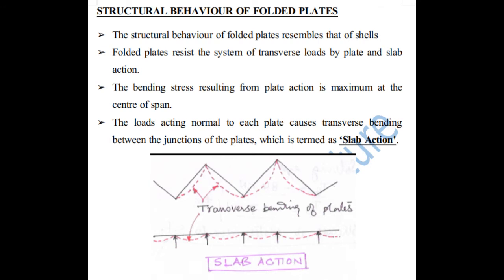The bending stress resulting from the plate action is maximum at the center of span. The loads acting normal to each plate cause transverse bending between the junctions of the plate — this phenomenon is called slab action. As you can see in the diagram, loads are acting 90 degrees to each plate, and the transverse bending is shown by a red dotted line.